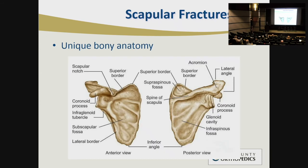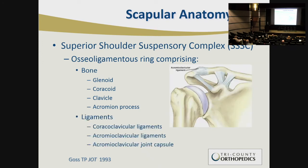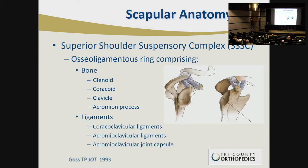Moving on to the scapula — a very unique bony anatomy with prominences important for ligament stability. Goss in 1993 described the superior shoulder suspensory complex: an osteoligamentous ring comprising the glenoid, the coracoid process, the clavicle, and the acromion process. The ligamentous components include the coracoclavicular ligaments, the acromioclavicular ligaments, and the acromioclavicular joint capsule and CA ligament. This ring provides stability of the shoulder for function.